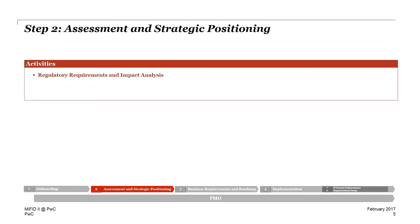In the second phase, called the assessment and strategic positioning, you need to take a very deep look at the regulatory requirements that originate in the MiFID 2 regulation. Currently this consists of the Level 1 and Level 2 regulation. Level 1 is already finalized while Level 2 is about to be finalized in October 2016. First parts of drafts of the Level 3 regulation have been published as well. Since MiFID 2 is a very huge and detailed regulation, we at PwC have developed a tool that helps navigate all these regulations and perform the regulatory requirement assessment effectively.